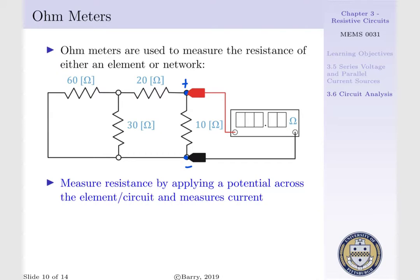We have to be careful, as current can leave our positive lead and split through our 20 ohm resistor and our 10 ohm resistor. After it goes through the 20, it can go through the 60 and 30.